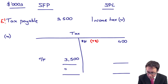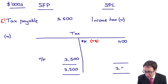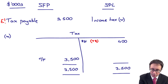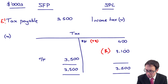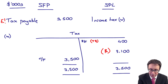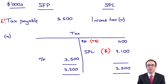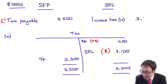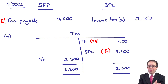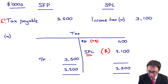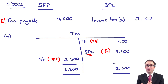But it doesn't balance up. You've got 3,500 on the left and 3,500 on the right — wait, there's a balancing figure. The difference is 3,100. That figure on the T-account is where you have recorded the expense in profit or loss. So your income tax expense — when you clear out the account, you're crediting that tax T-account and debiting your statement of profit or loss with the 3,100. So you have the expense in the statement of profit or loss, and the carry-forward is on the statement of financial position.